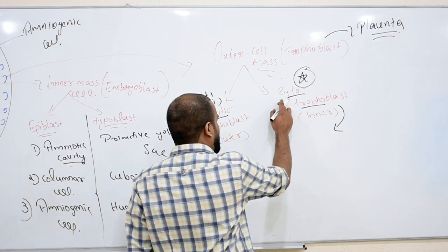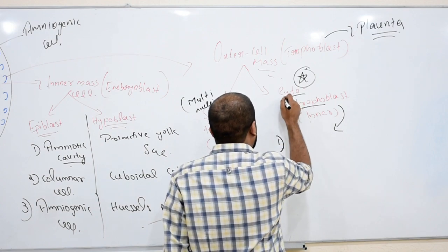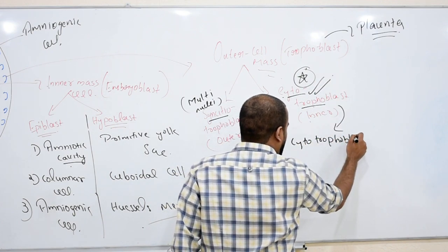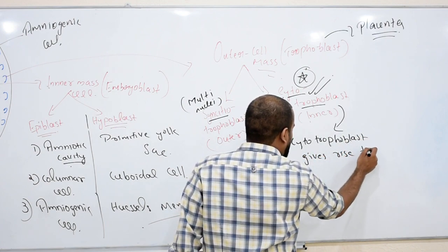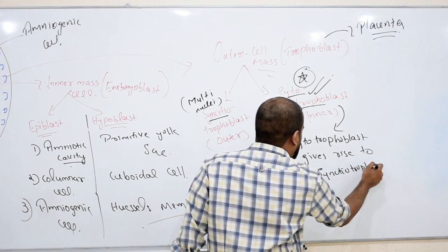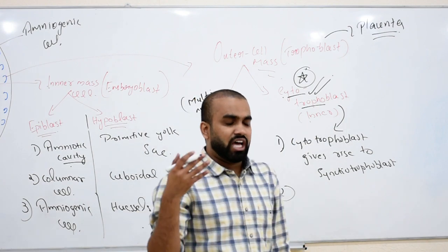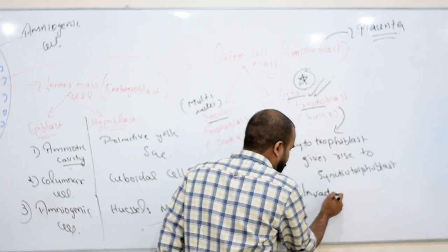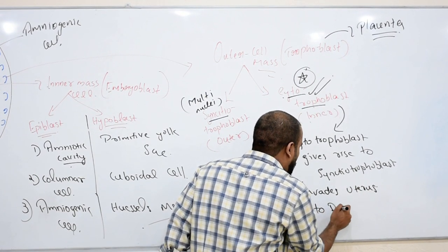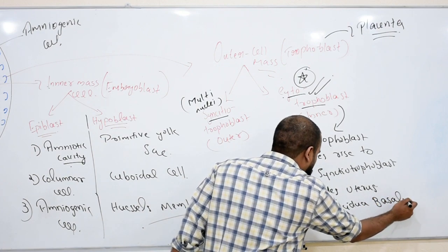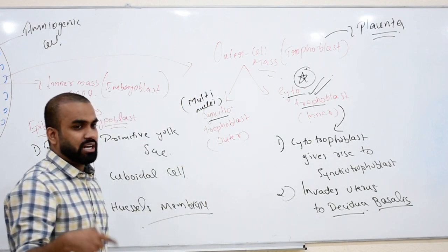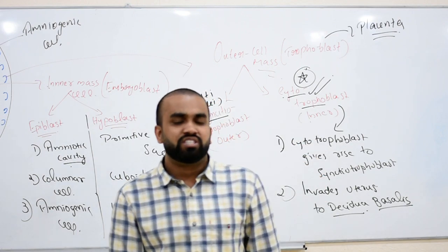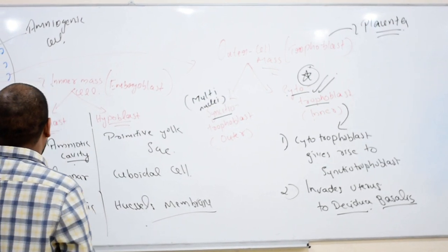Cytotrophoblast is important for two reasons: first, cytotrophoblast gives rise to syncytiotrophoblast. Second, cytotrophoblast is the active layer that invades the uterus — specifically, it invades the decidua basalis layer of the uterus. So cytotrophoblast does two things: forms syncytiotrophoblast and invades the decidua basalis.